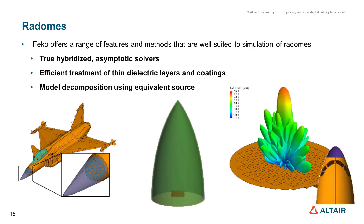Radomes are electrically transparent structures that protect the antennas. FEKO offers a wide range of features and methods well suited to simulation of radomes, such as true hybridization, asymptotic solvers, efficient treatment of thin dielectric layers and coatings, as well as model decomposition using equivalent sources.